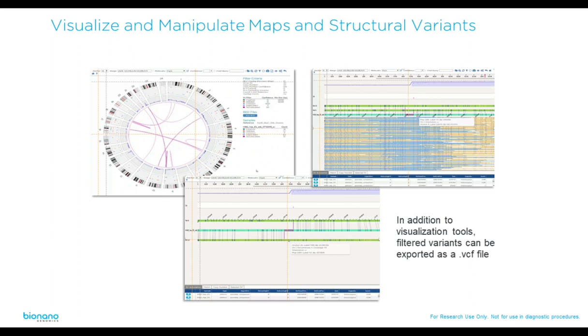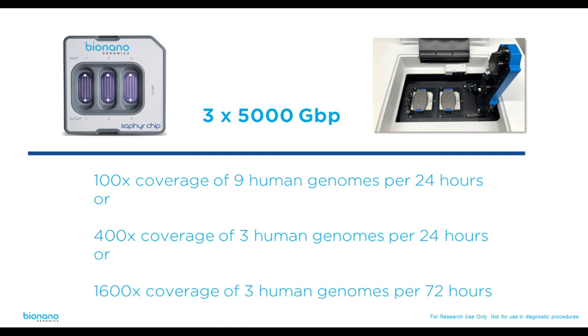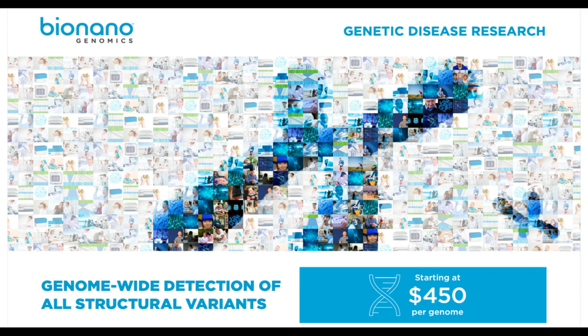Our software displays all detected structural variants in a circus plot — translocations in magenta in the middle, with concentric circles showing copy numbers, deletions, inversions, and duplications. Clicking any structural variant shows a zoomed map with the exact alignment against the reference and the molecules used to call it. You can also export structural variants as a VCF file after filtering. What makes BioNano unique is the enormous throughput: chips have three flow cells for three genomes at a time, collecting 100x coverage — recommended for genetic disease — on nine human genomes per day per instrument. For cancer, 400x coverage is recommended, and up to 1600x coverage of three human genomes in just three days. Cost per genome is about $450.